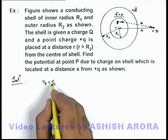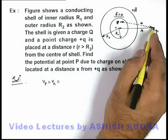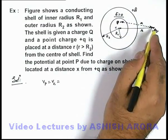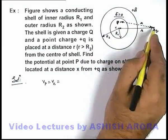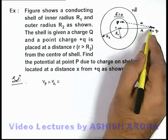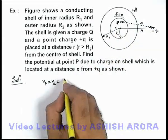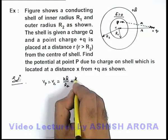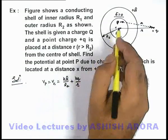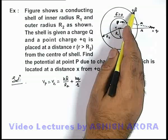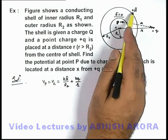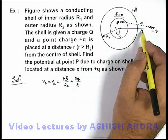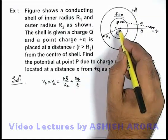The potential at point C is given by two contributions: one due to the charge on the shell, and one due to the charge +q located at a distance r from point C. This can be written as kq/r₂ — the potential at point C due to the charge on the outer surface of the shell — plus kq/r, which is due to the point charge located at a distance r from the center of the shell.